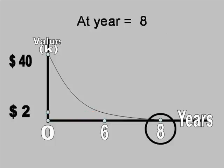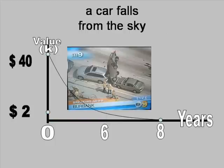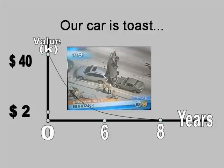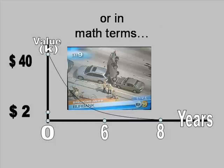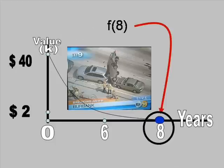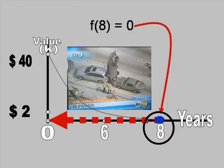At year equals 8, a car falls from the sky on top of our car. Our car is toast. Serious toast. Or in math terms, we would say F of 8 equals 0.